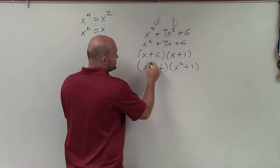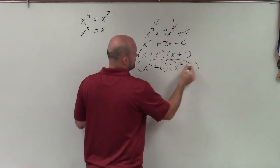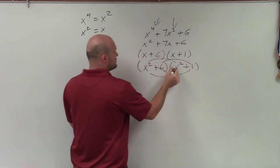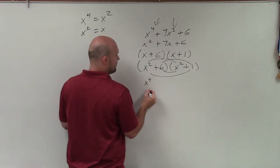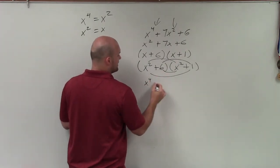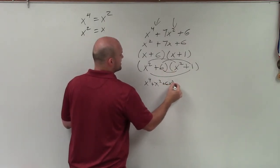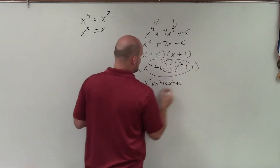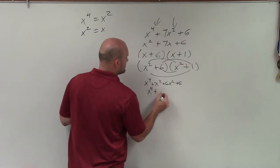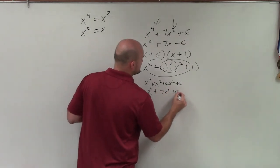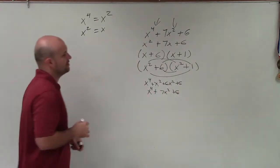So what I need to do is I need to check by using FOIL. So x squared times x squared is x to the fourth. x squared times 1 is x squared. 6 times x squared is a positive 6x squared. And 6 times 1 is positive 6. Therefore, x to the fourth plus 7x squared plus 6 is going to be your equation.